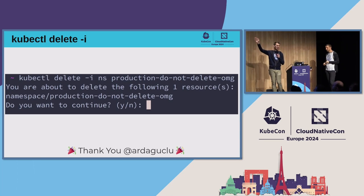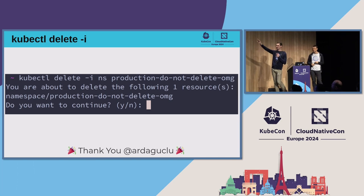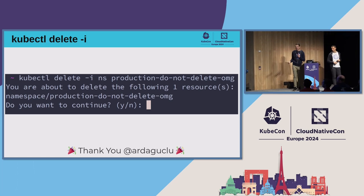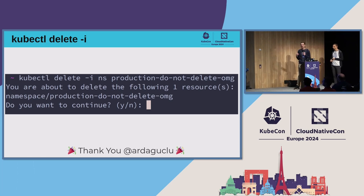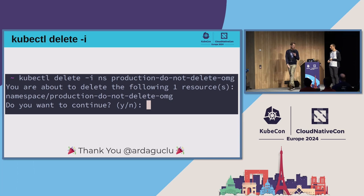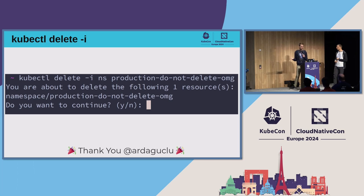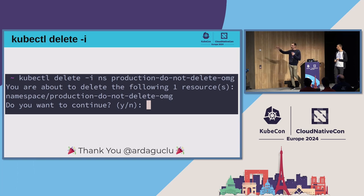kubectl delete -i — take a look at this. How many times has this happened where you accidentally deleted production by auto-completing? As soon as 1.30 drops, and right now behind an environment variable, you can toss a -i on delete and it will prompt you before you actually delete anything. So you can stop yourself from shooting yourself in the foot — just get in the habit of using kubectl delete -i every time.